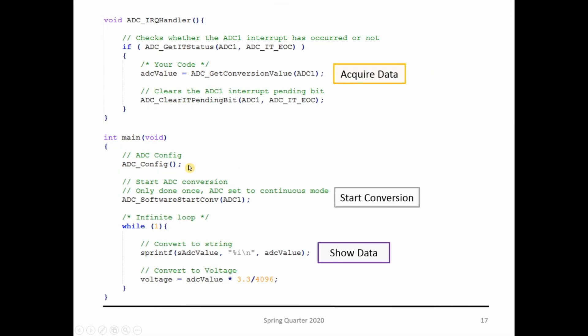Inside my main, we just saw the ADC config. Then I start the conversion the first time and wait here for showing data. Inside your ADC ISR, it acquires the data, sends it to the volatile variable, and the ADC is responsible to start the conversion again.